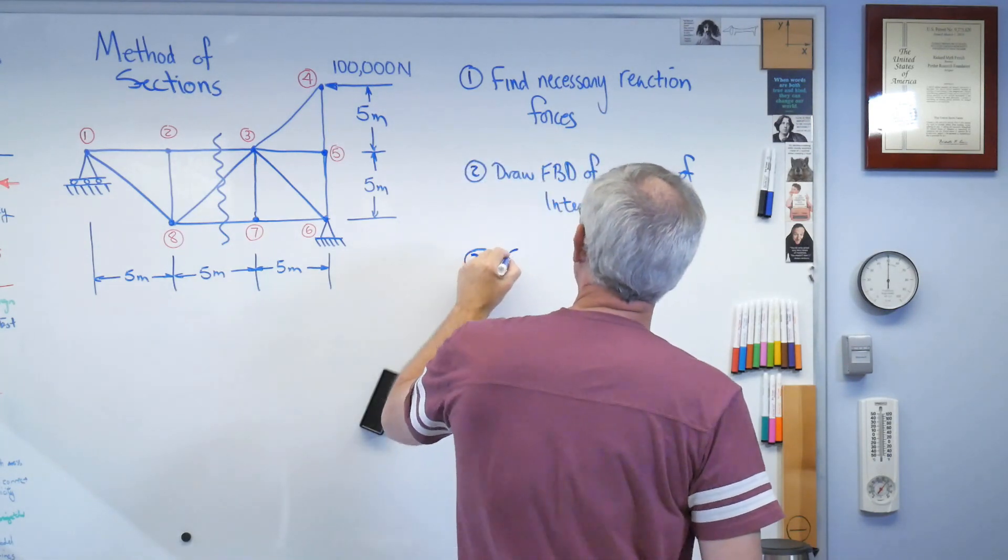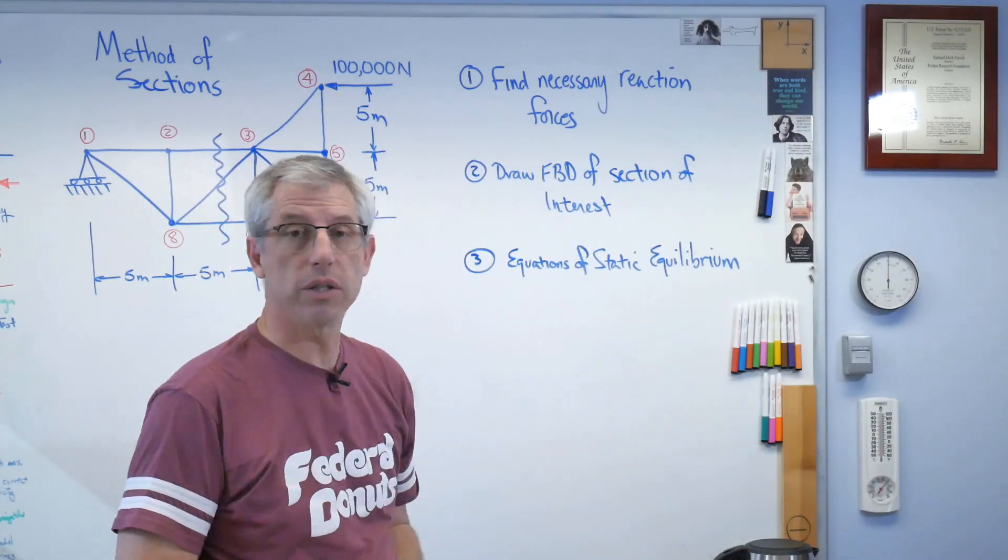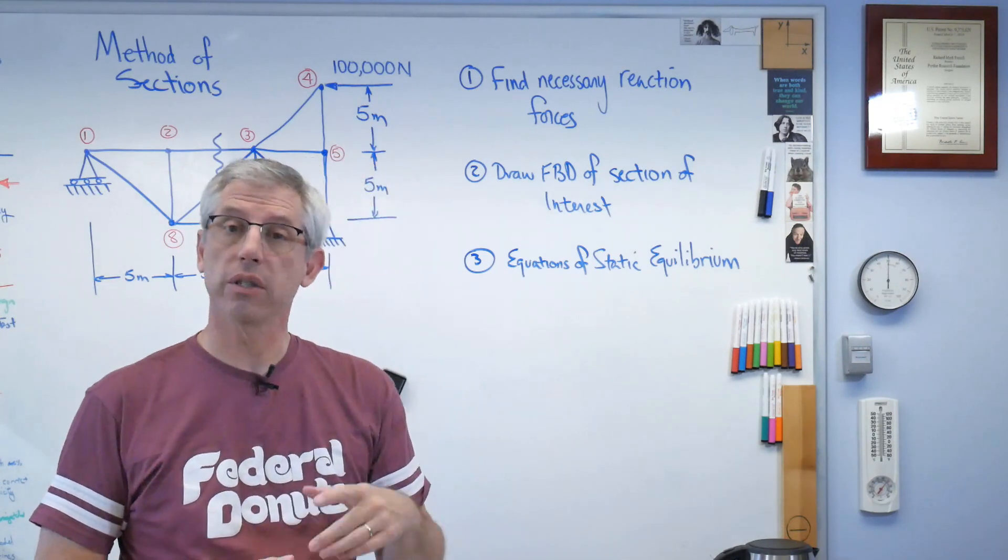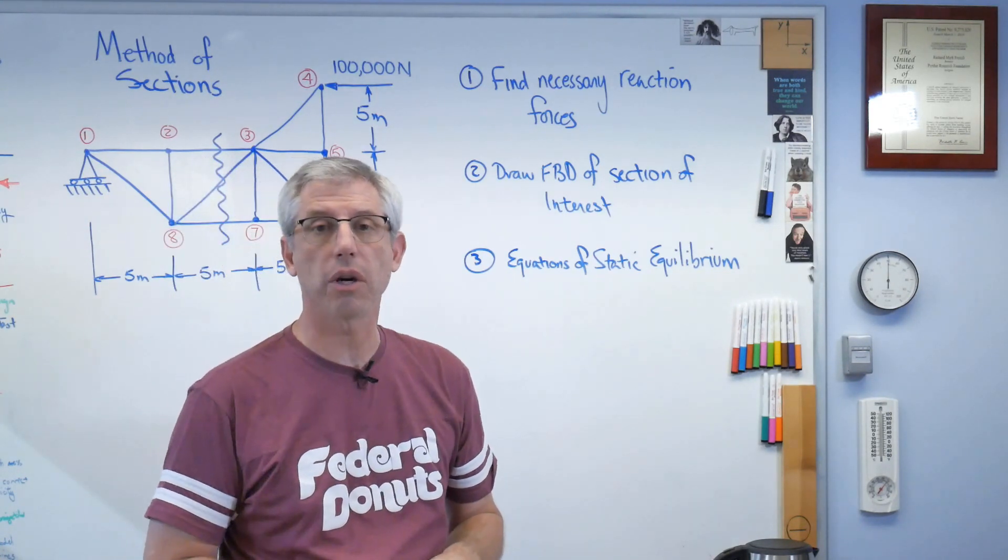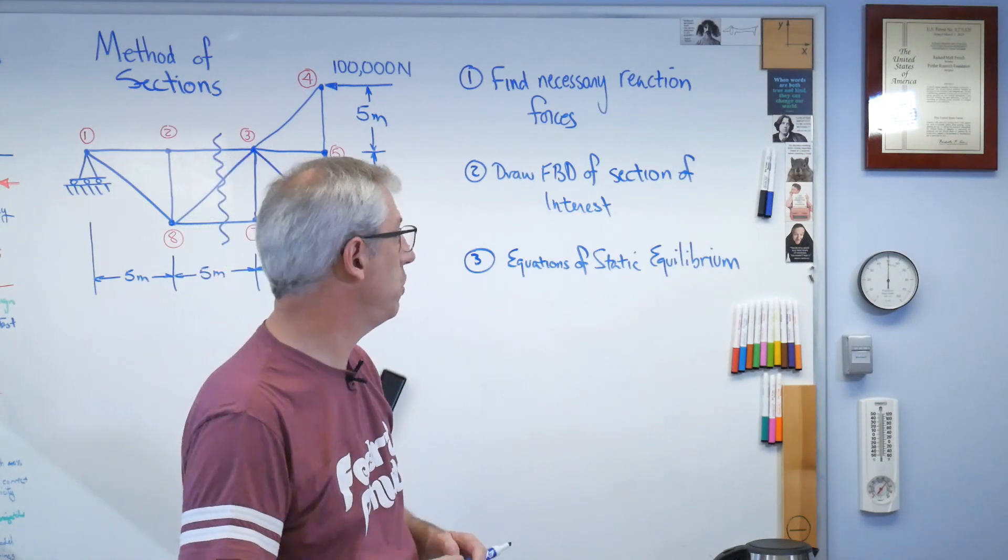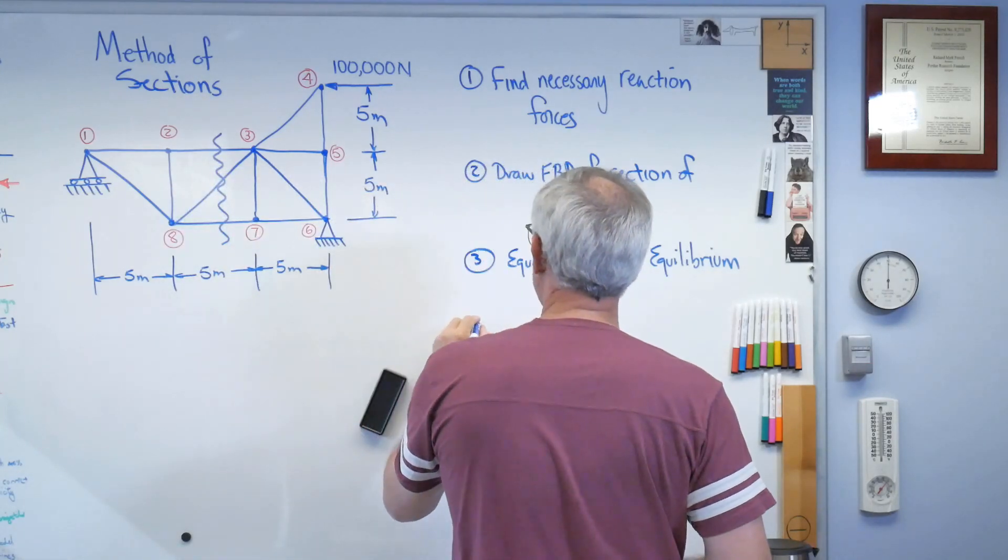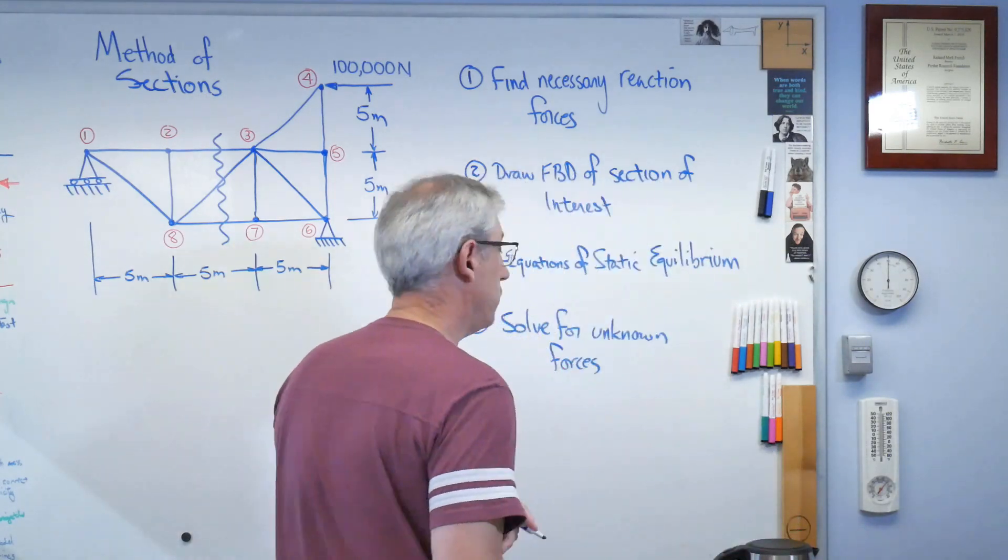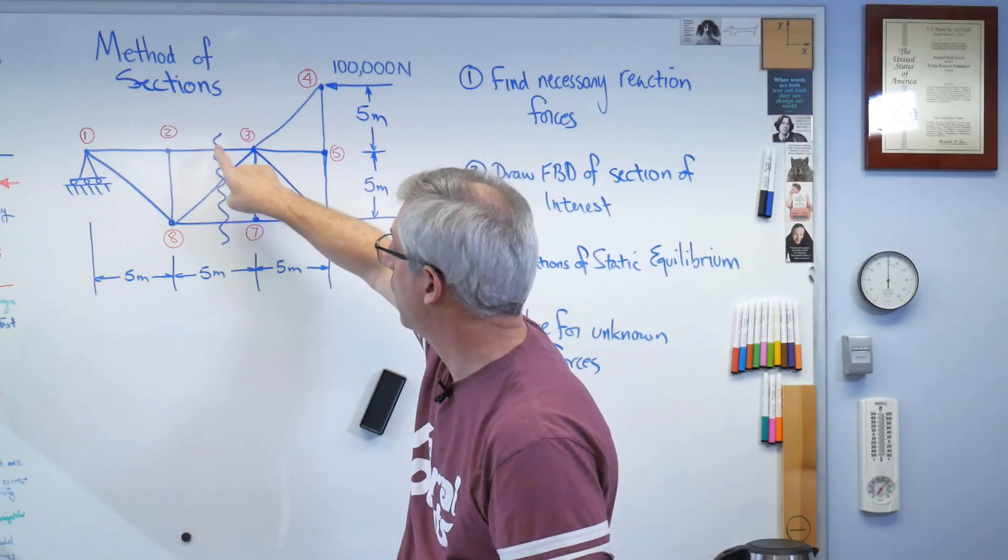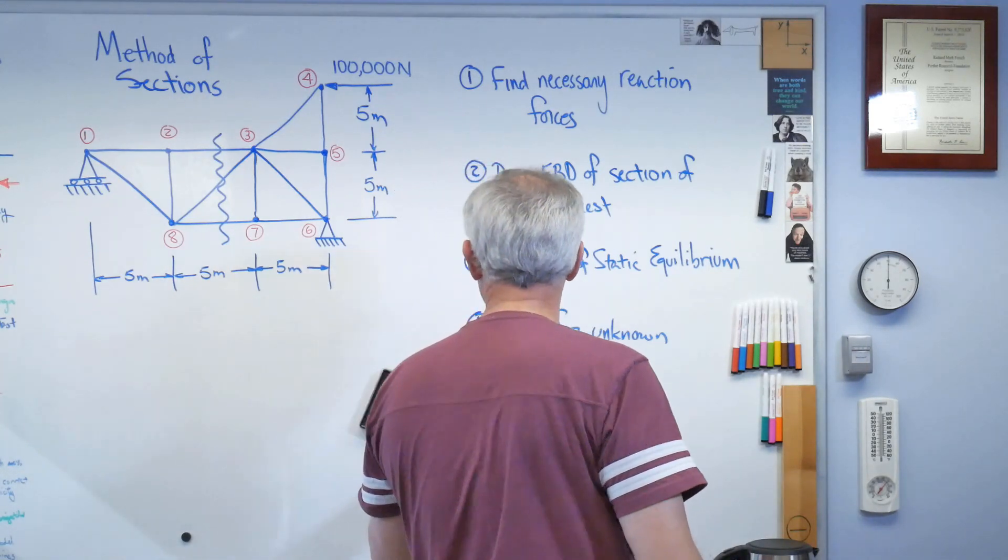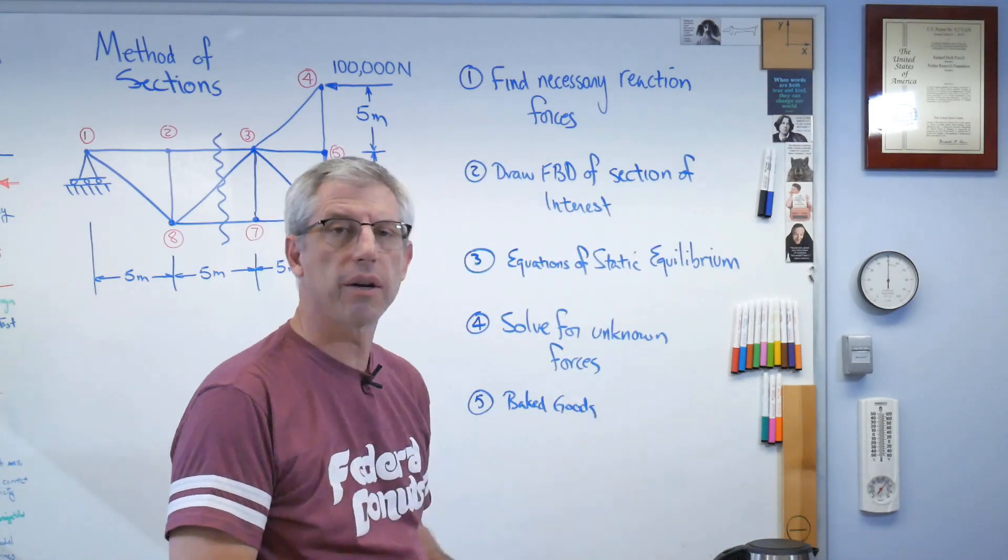Step three is we're going to write out the equations of static equilibrium. That's just a 50 cent expression for saying sum of the forces in the x direction equals zero, sum of the forces in the y direction equals zero, and the sum of the moments in plane is also zero. This works just as well in 3D as it does in 2D, but we're going to stick with 2D right now. Number four, solve for unknown forces. In our case, we're going to solve for the forces in the elements that cross our fictitious cut. Five, enjoy baked goods. This is optional.